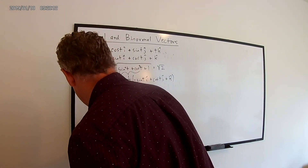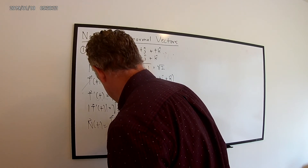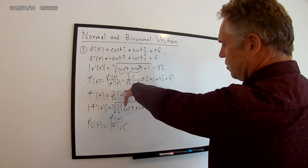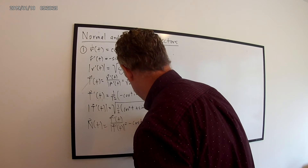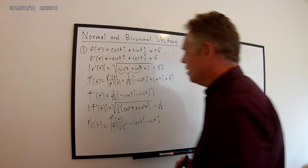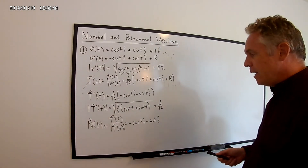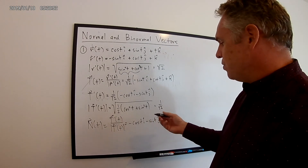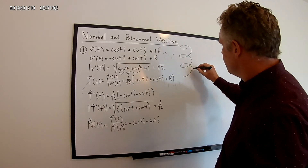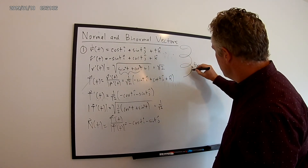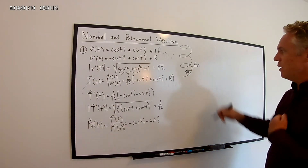The unit normal vector N(t) = T'(t) / |T'(t)|. Dividing T'(t) by its magnitude, the 1/√2 factors cancel, leaving us with N(t) = −cos(t) î − sin(t) ĵ. This vector is perpendicular to the unit tangent vector at any point. For our helix, this unit normal vector is horizontal and points toward the z-axis.